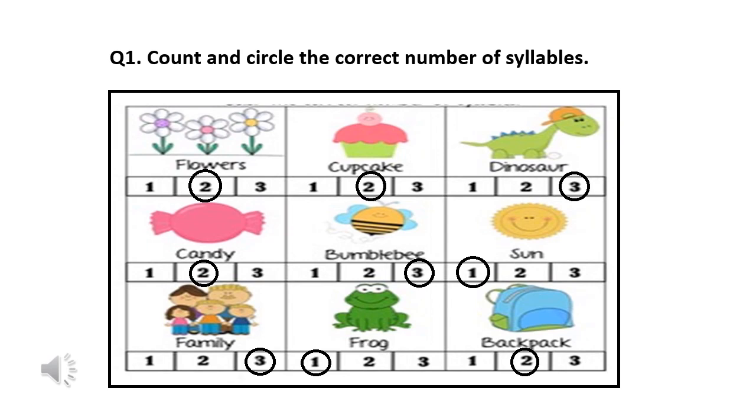Flowers have two syllables. Cupcake has three syllables. Dinosaur, three. Candy, two. Bumblebee, three. Sun, one.